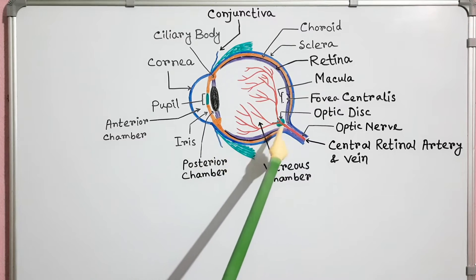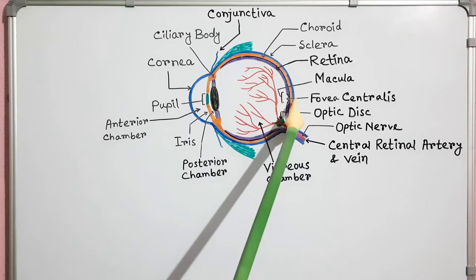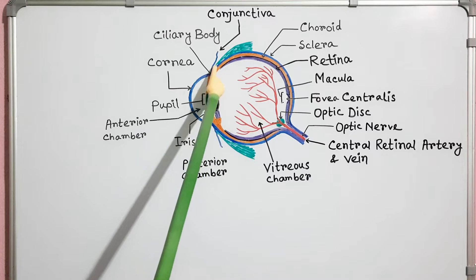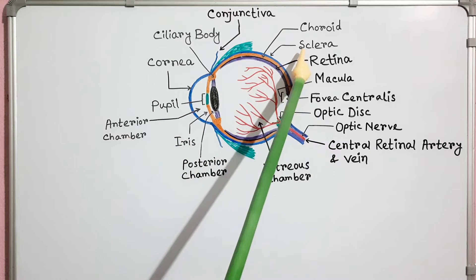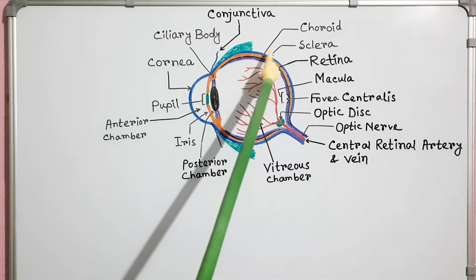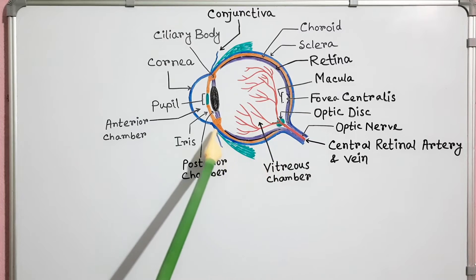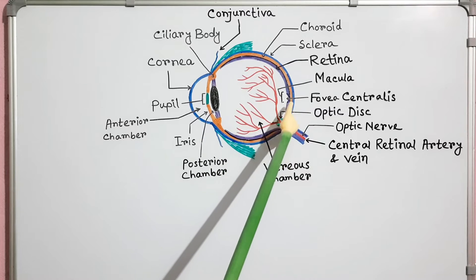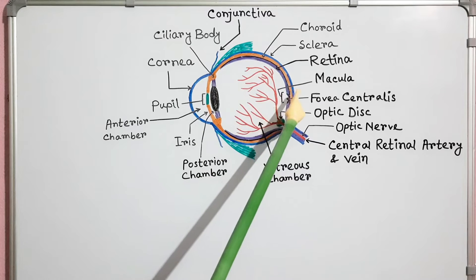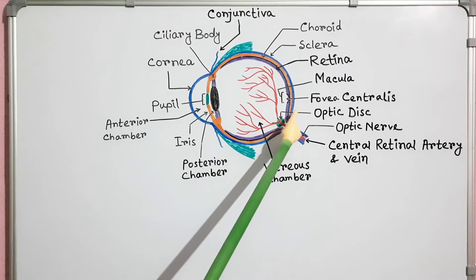It covers the posterior five-sixths of the eye. It consists of dense collagenous connective tissue with elastic fibers. The sclera helps to maintain the shape of the eye, protects the internal structures of the eye, and provides an attachment point for the extrinsic eye muscles.